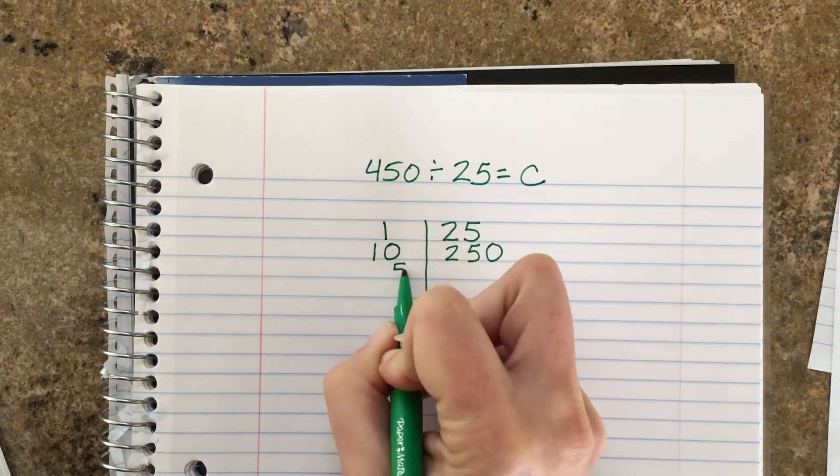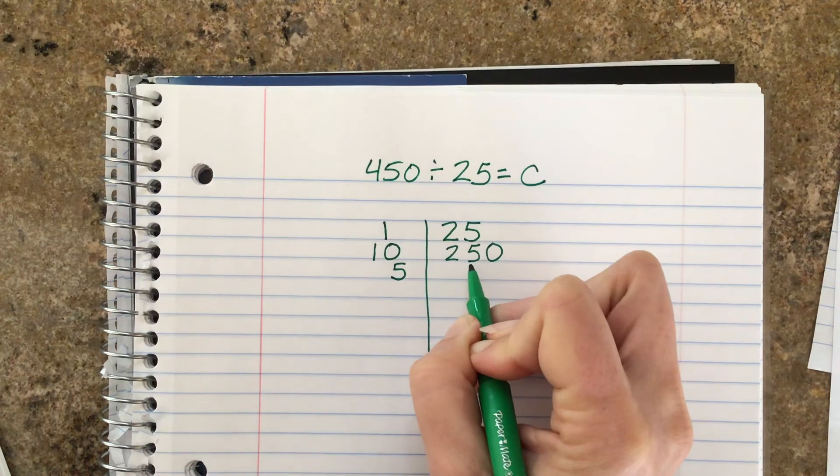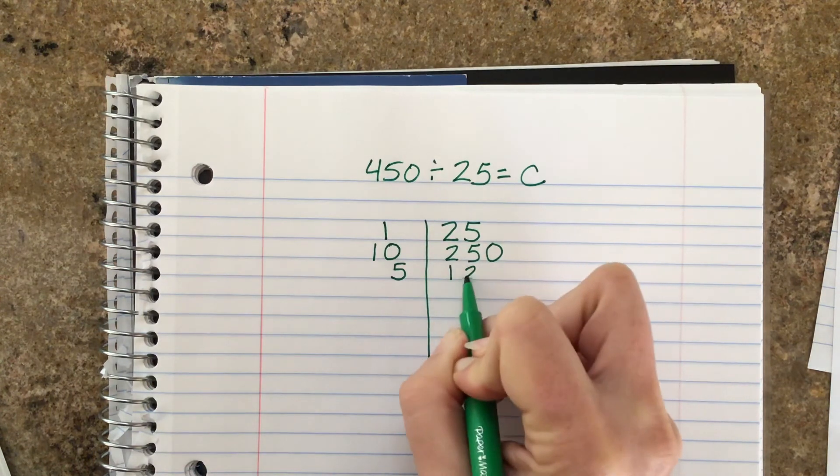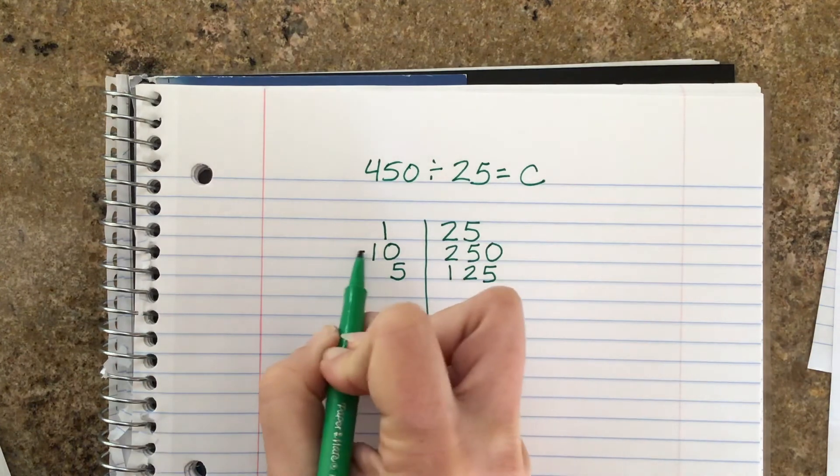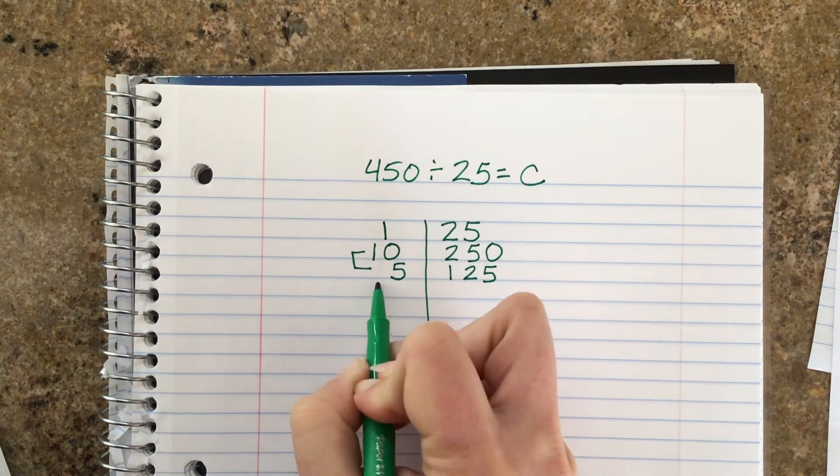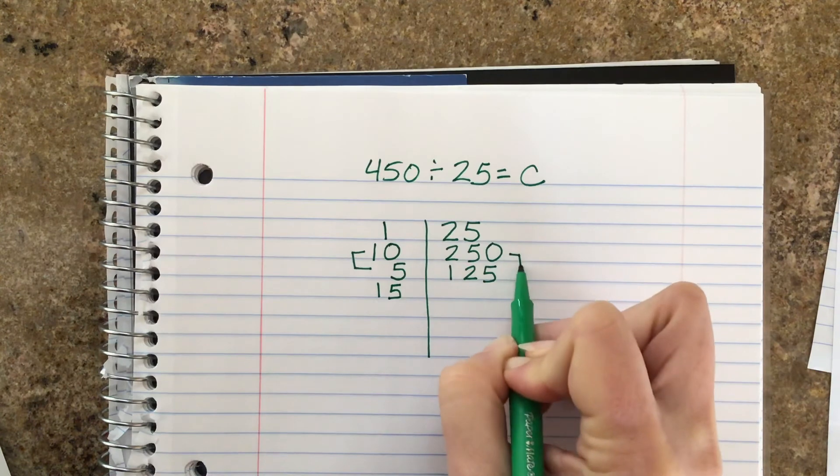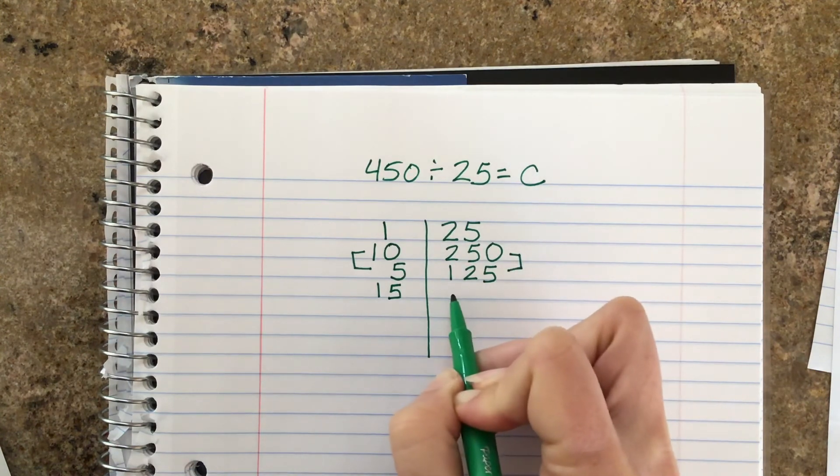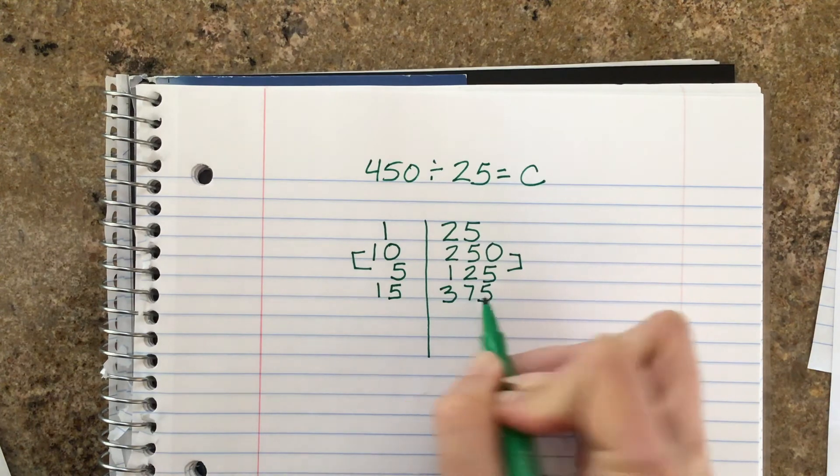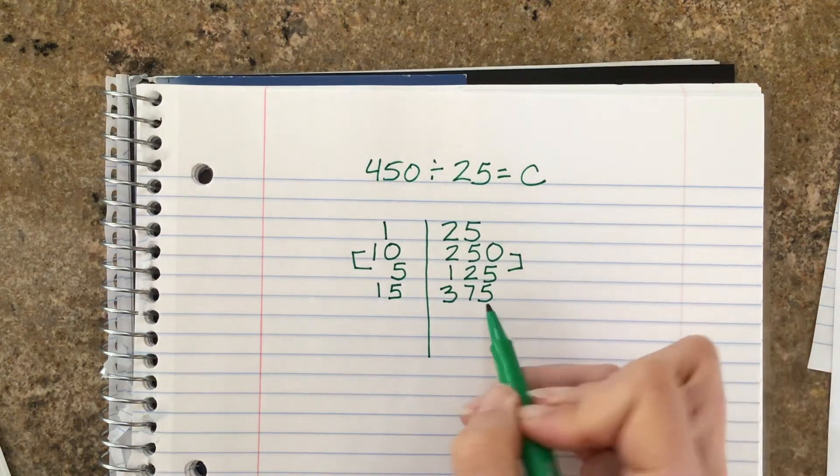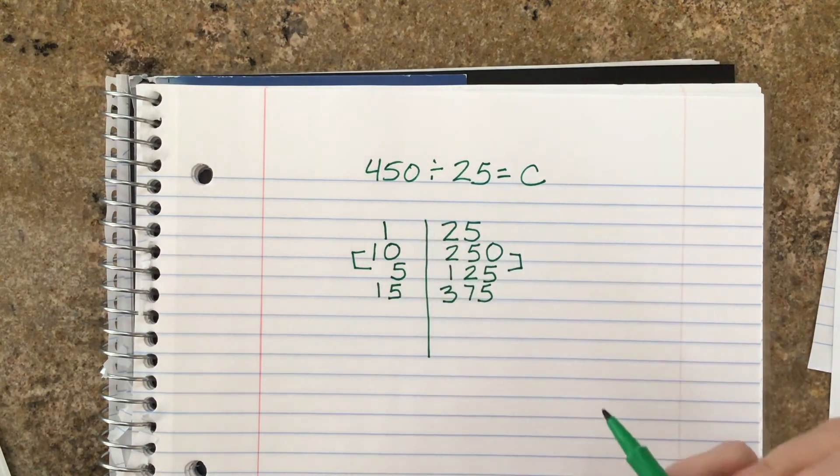5 is half of 10, half of 250 would be 125. We're going to add these together, 10 and 5, to get 15. So we're going to add these together to get this answer here. Okay, we're getting closer. We're at 375, we need to get to 450.